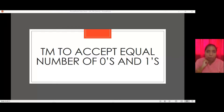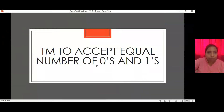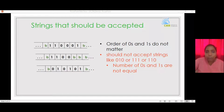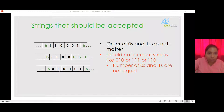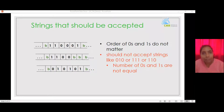To understand the working of a Turing machine, we will design one to accept an equal number of zeros and ones. The Turing machine should accept strings such as 110001, 1100, or 010101 — where there is an equal number of ones and zeros, regardless of order. It should not accept strings like 010, 111, or 110, where there is an unequal number of zeros and ones.